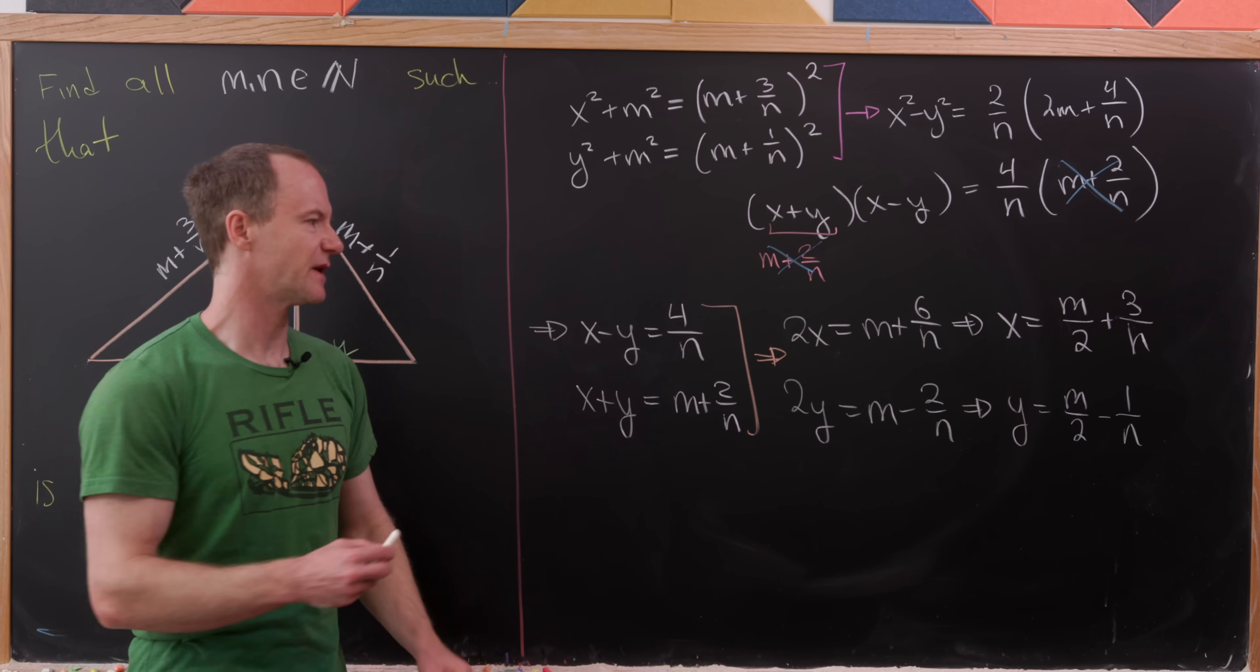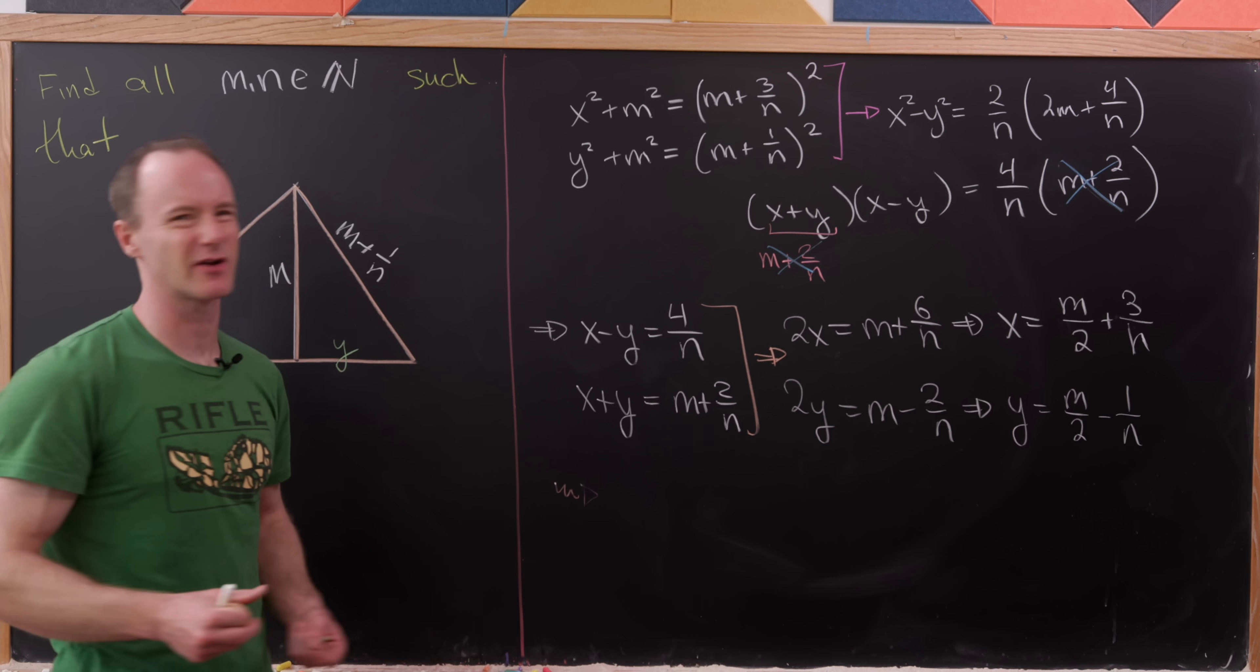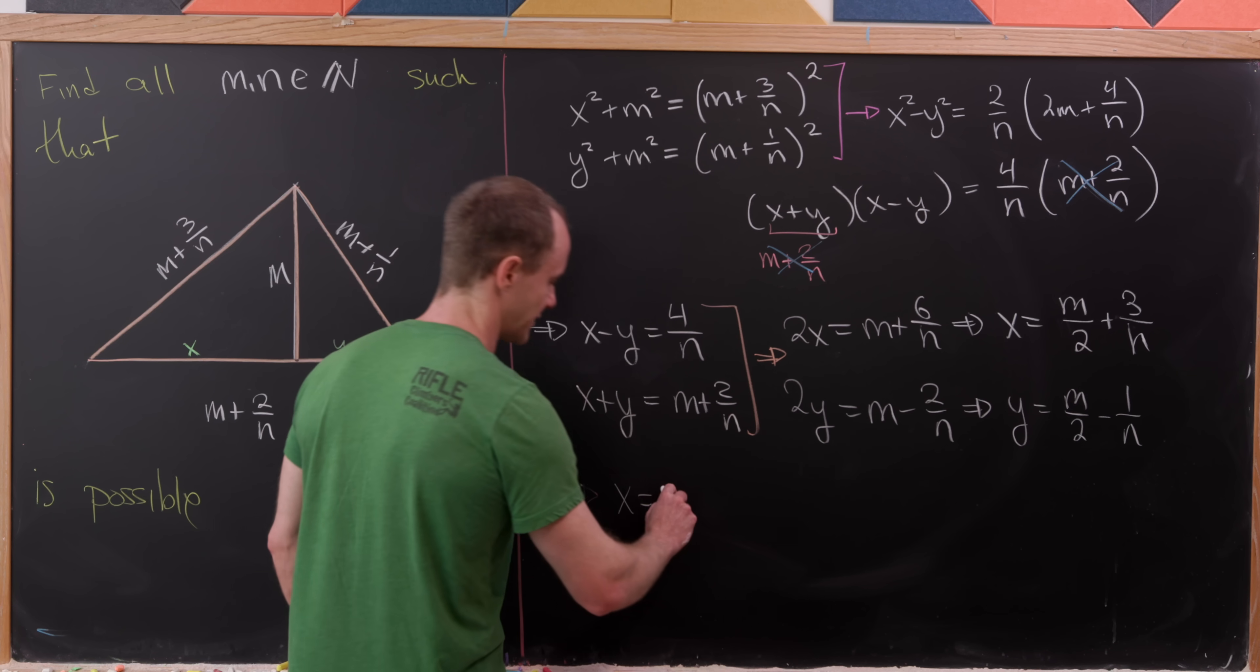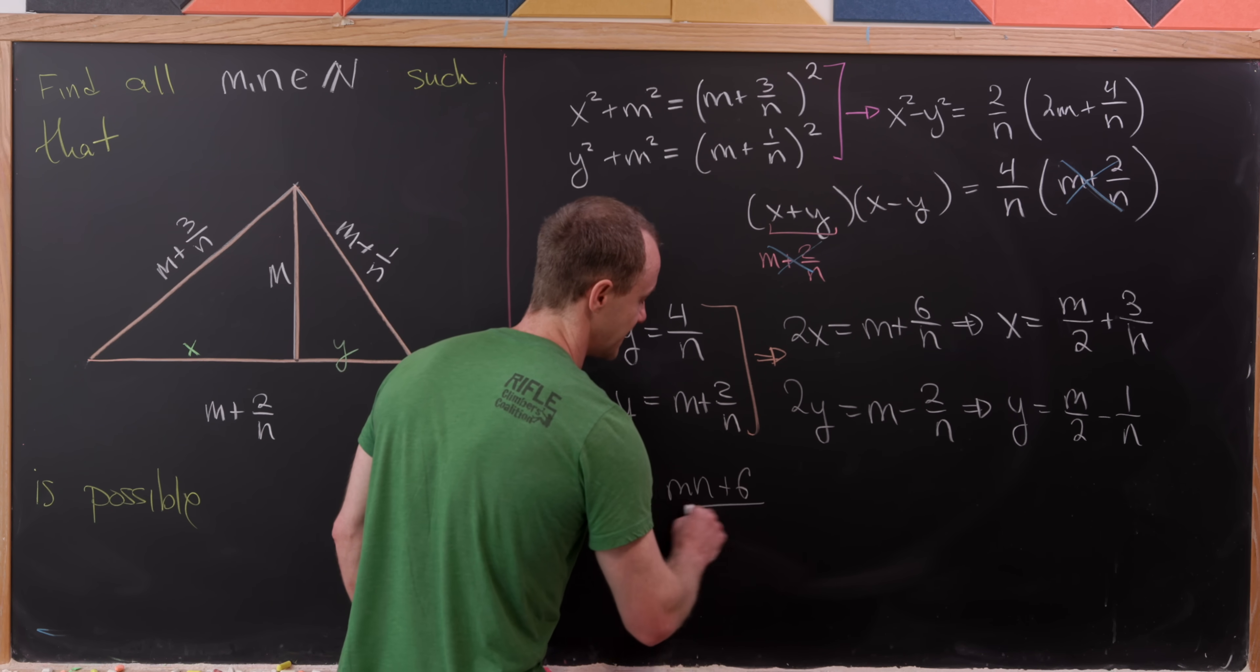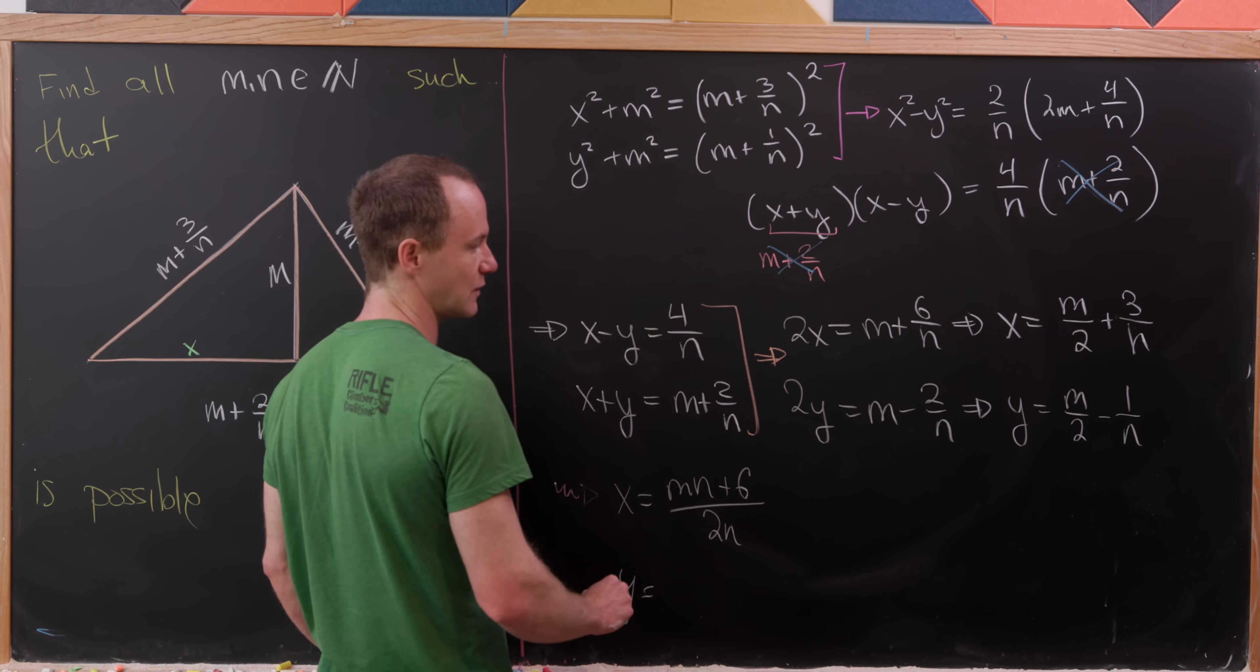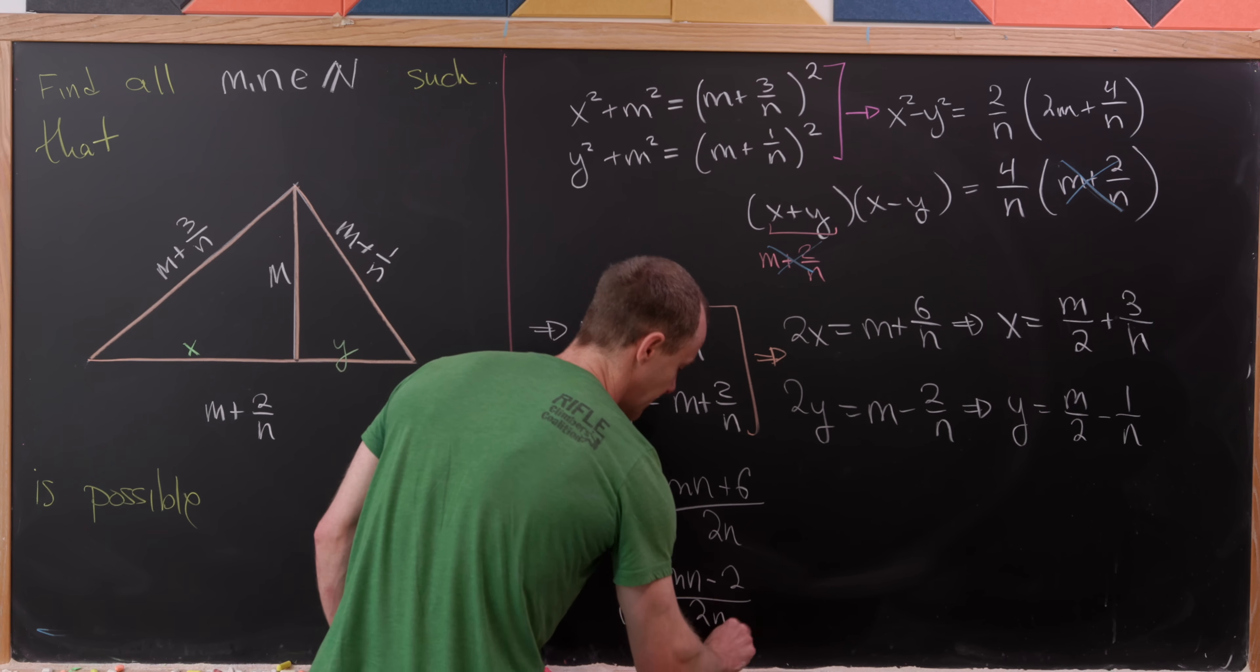And now, perhaps for just a little bit of simplification, I'm gonna take those expressions for x and y and put them together as one rational expression. So that means we'll have x is equal to m times n plus 6 over 2 times n. And then likewise, we'll have y is equal to m times n minus 2 over 2 times n.